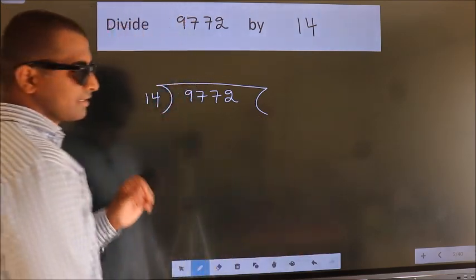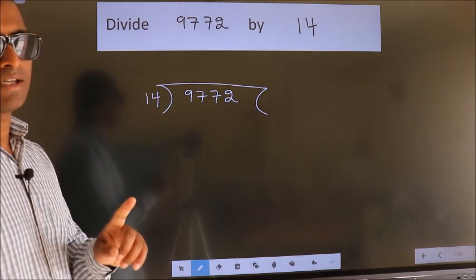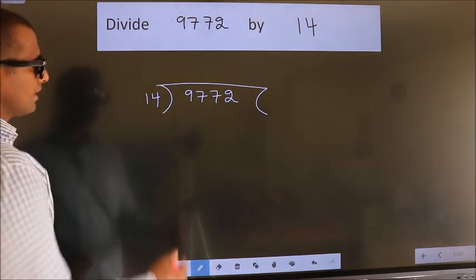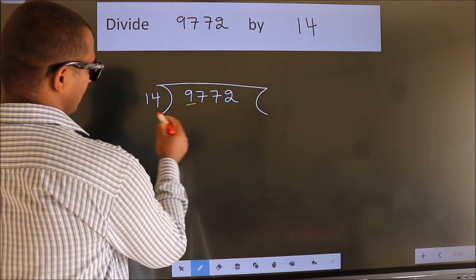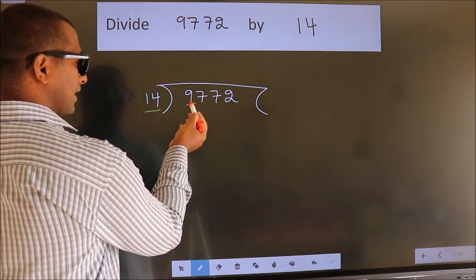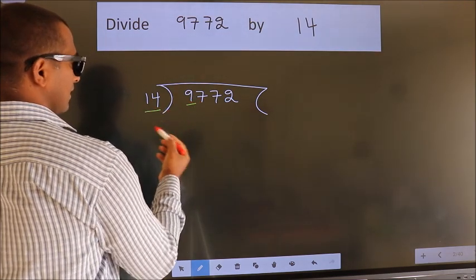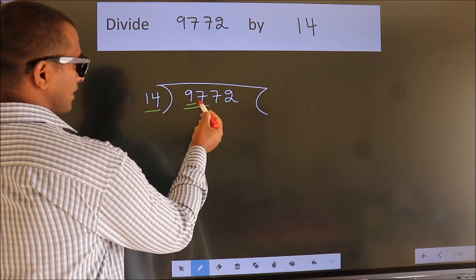This is your step 1. Next. Here we have 9. Here 14. 9 smaller than 14. So we should take two numbers, 97.